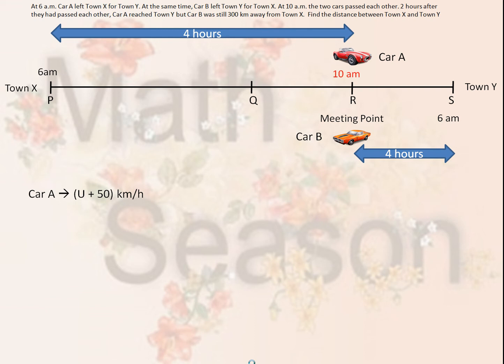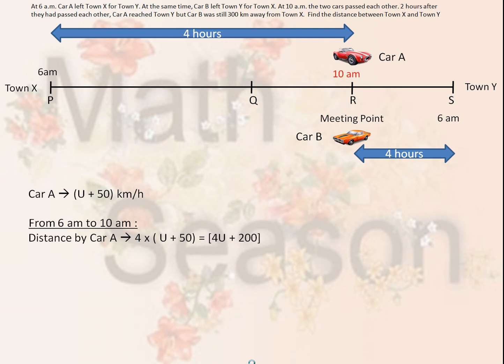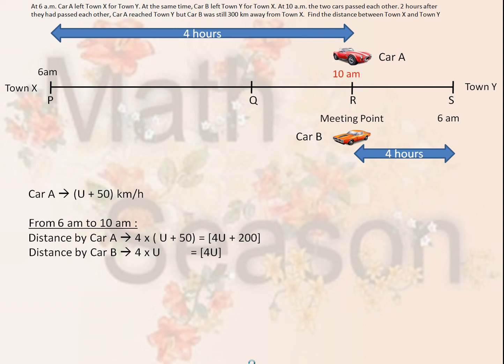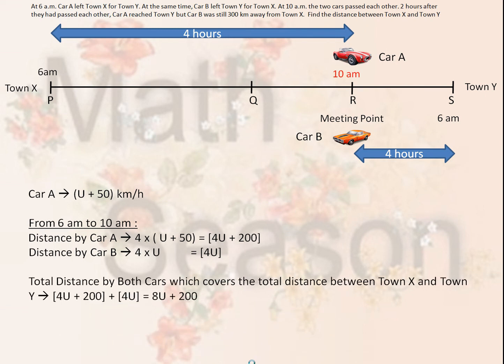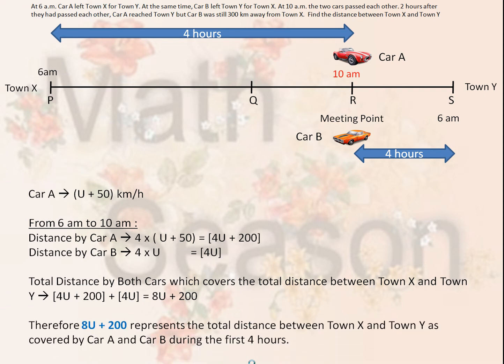For car A, traveling at U plus 50 kilometers per hour: from 6 a.m. to 10 a.m., the distance covered by car A equals 4 multiplied by (U plus 50), which equals 4U plus 200. Distance covered by car B equals 4 times U, which equals 4U. The total distance covered by both cars — which equals the total distance between town X and town Y — is 4U plus 200 plus 4U, equal to 8U plus 200.